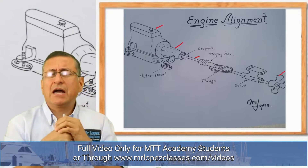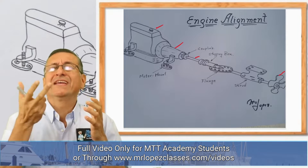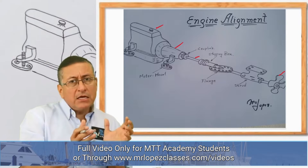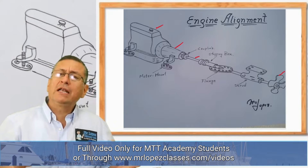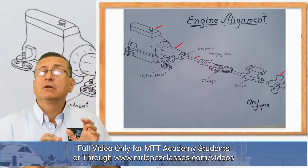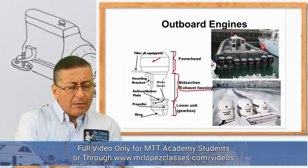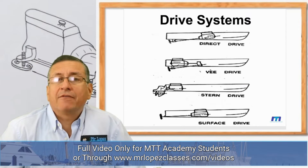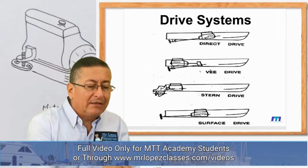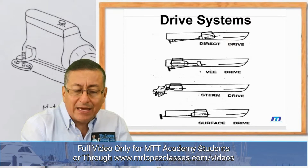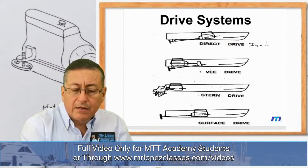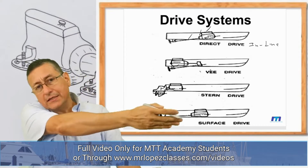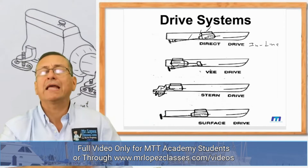In marine applications, we are going to study the propulsion systems according to the location of the transmission — whether the transmission is located inside or outside. We will analyze where the engine and transmission are located. The most common types are: the first one, the direct drive, also called inline, because the engine, transmission, and shaft are all located in the same line.